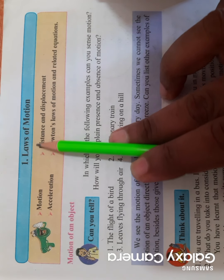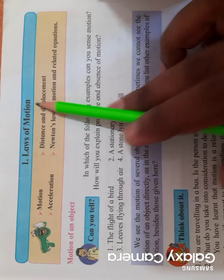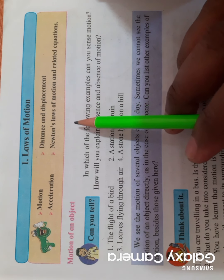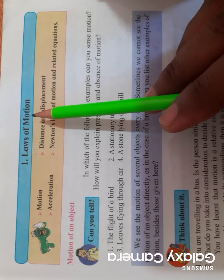As you can see in the video, the name of the chapter - the first chapter in the Science textbook - is Laws of Motion. As we know, we have three parts: physics, chemistry, and biology. Laws of Motion is part of the physics chapter.